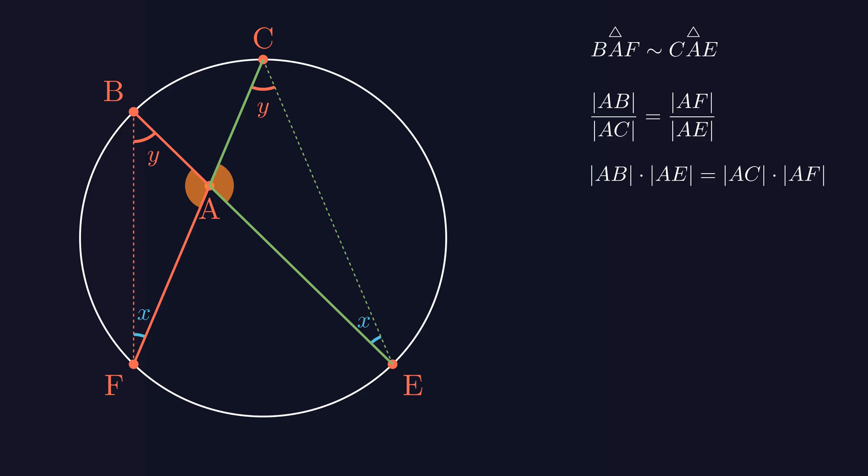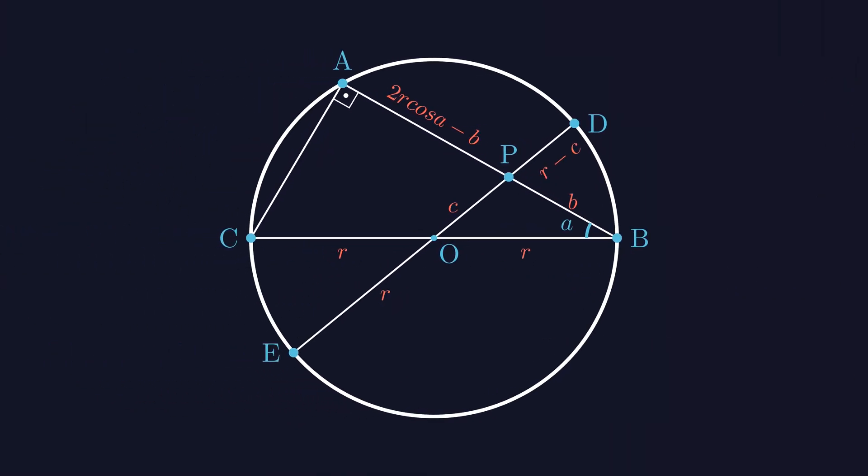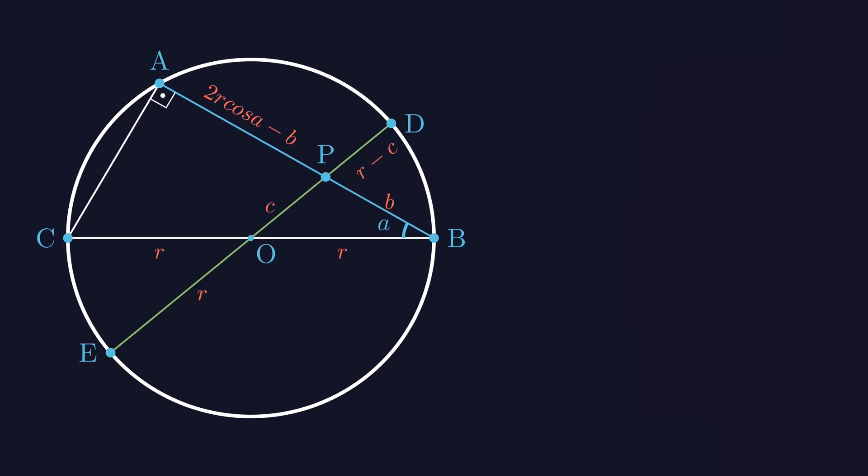Alright, keep that in mind. Now, let's bring back the earlier figure. Take a look at the blue and green lines. They also intersect at a single point. That means we can apply the theorem we just proved.